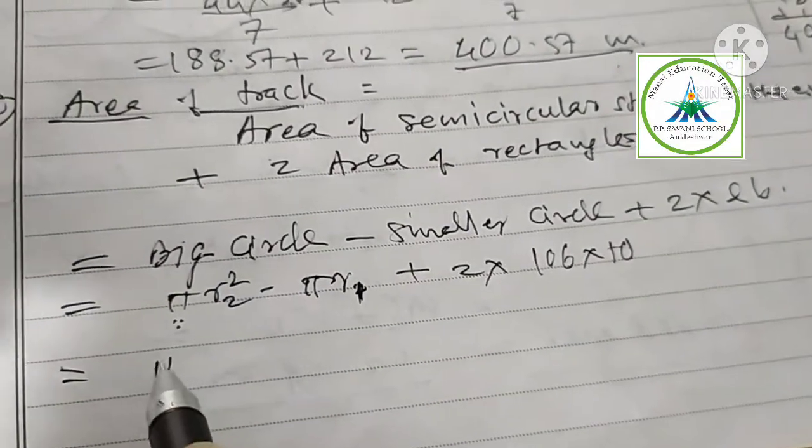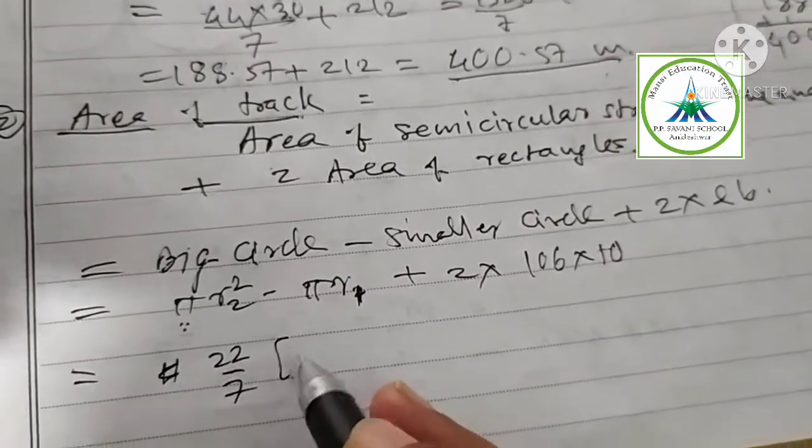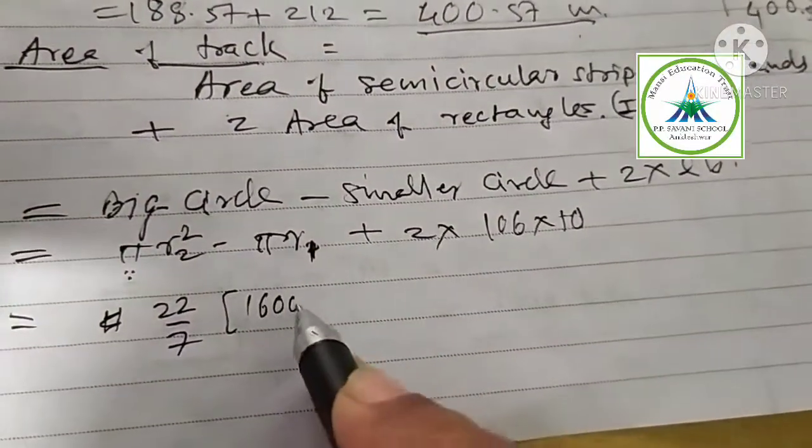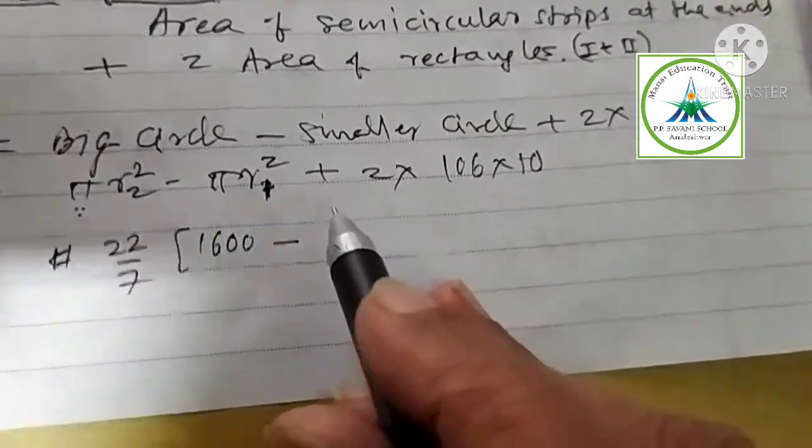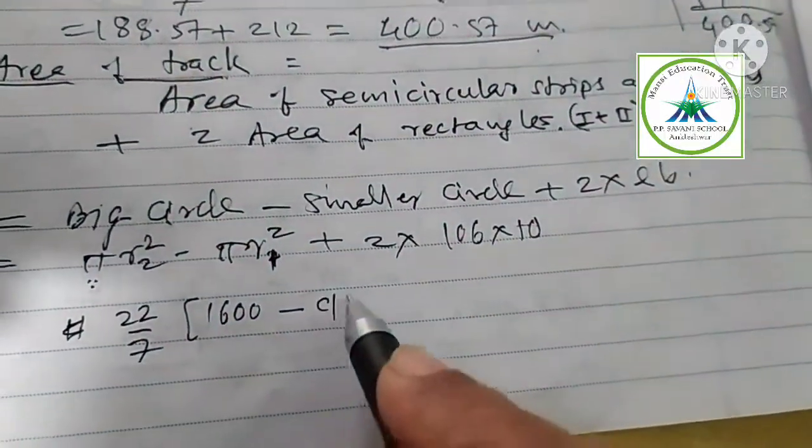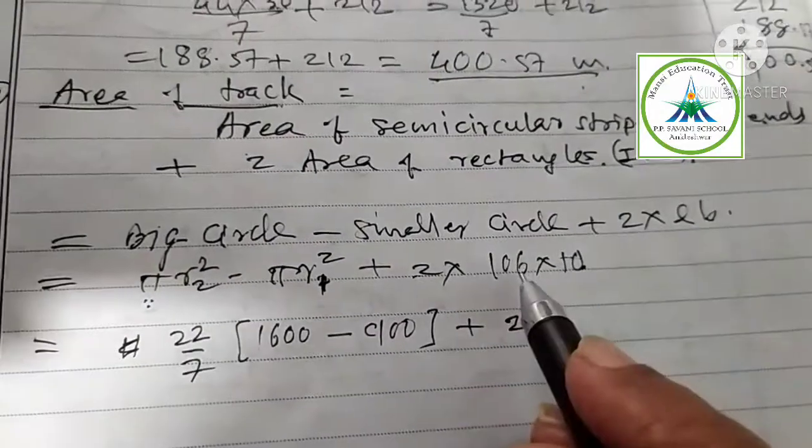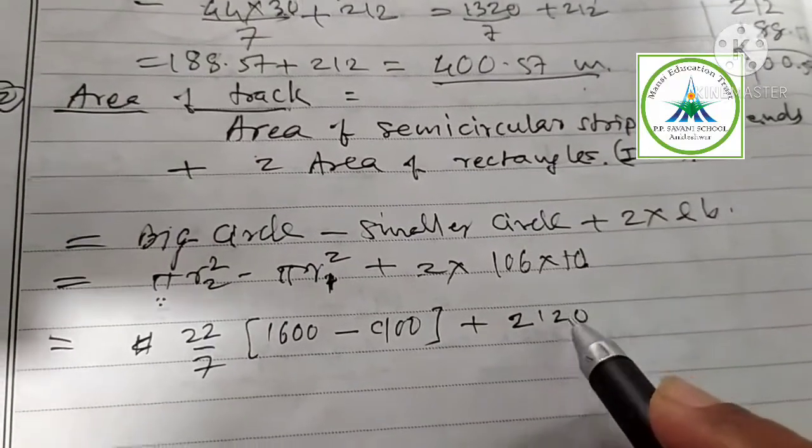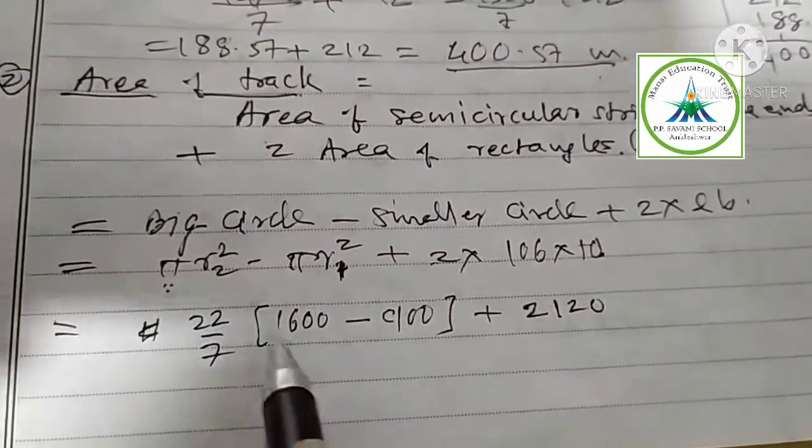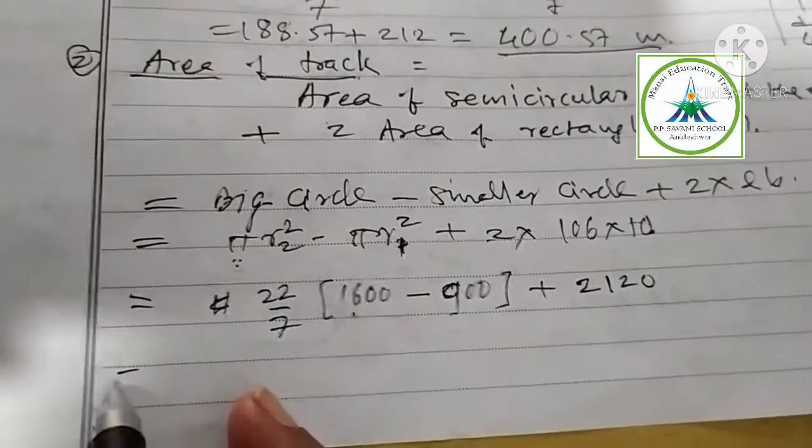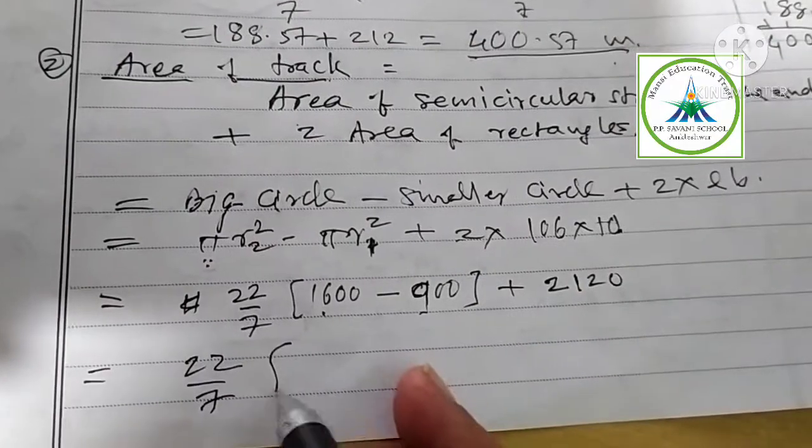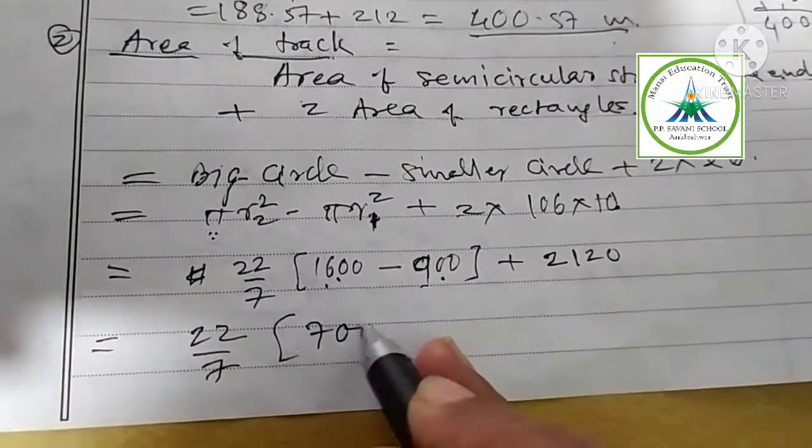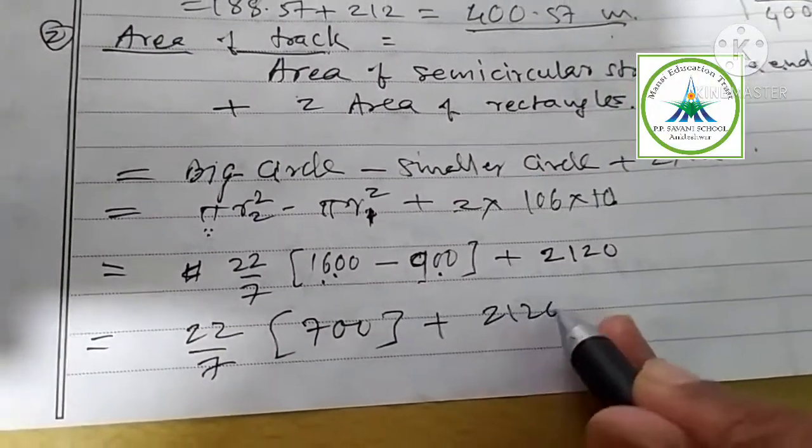Put the value. Pi is common: 22 upon 7. R2 is 40, 40 square is 1600, minus R1 square is 30 square means 900, plus 2 times 2 into 106 is 212, multiplied by 10 is 2120. Subtract, we are getting 22 upon 7, bracket 1600 minus 900, 700, plus 2120. Here 7, 7 cancels, so 2200.